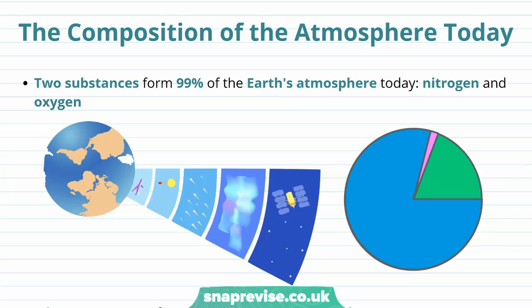If you've seen our video on the Earth's early atmosphere, you'll know that this early atmosphere consisted of high levels of carbon dioxide and water vapor formed by the eruption of volcanoes. However, the Earth's atmosphere today is totally different, and two substances form 99% of this layer of gas that surrounds the Earth.